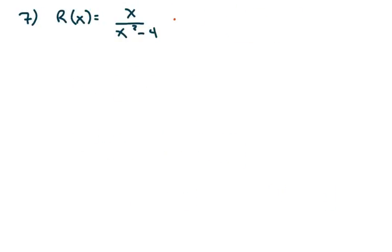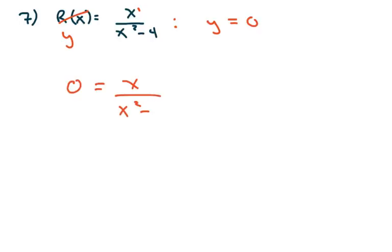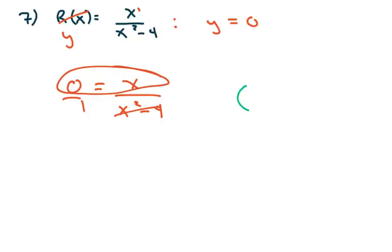Here's another one where the degree in the numerator is smaller, so y equals 0. Setting this to 0 and cross multiplying, this cancels out, so we just get x equals 0. When x is 0, y is 0 — that's where it crosses the horizontal asymptote.